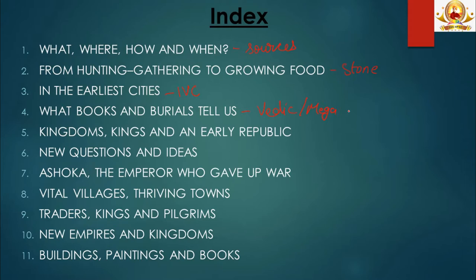The fifth chapter, 'Kingdoms, Kings and an Early Republic,' talks about the Janapadas and Mahajanapadas. The sixth chapter, 'New Questions and Ideas,' talks about the rise of two new religions, Buddhism and Jainism. Chapter 7 covers the Mauryan age in general and King Ashoka in particular. Chapters 8 and 9 cover the post-Mauryan age and trade and urbanization. Chapters 10 and 11 cover the Gupta age, the post-Gupta age, and the sources of these periods. We will cover these topics one by one in our videos.